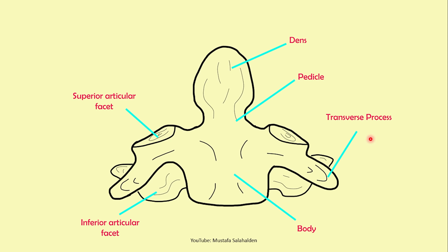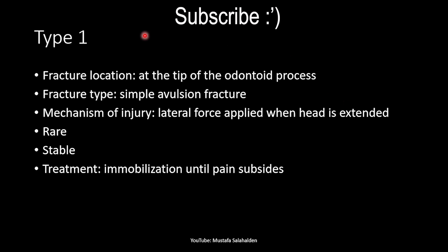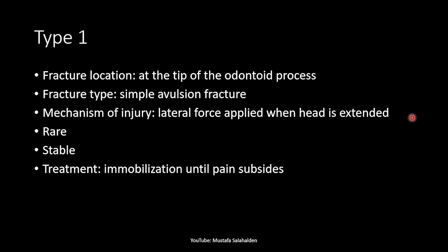Type 1 fracture location is at the tip of the odontoid process. It is a simple avulsion fracture. The mechanism of injury is lateral force applied when the head is extended. It is a rare type and it is stable. Because it is a stable fracture, the treatment is immobilization by a rigid collar until pain subsides.